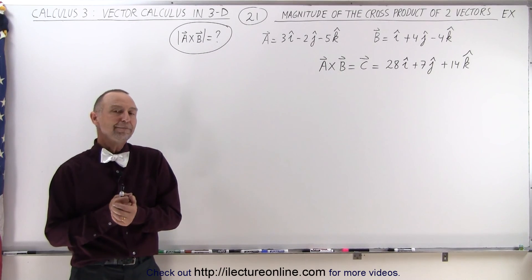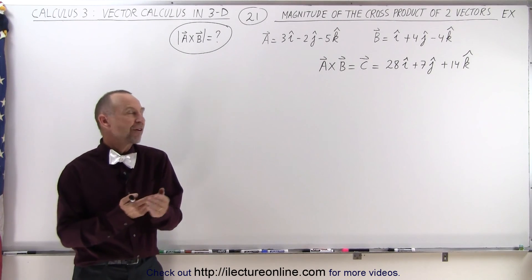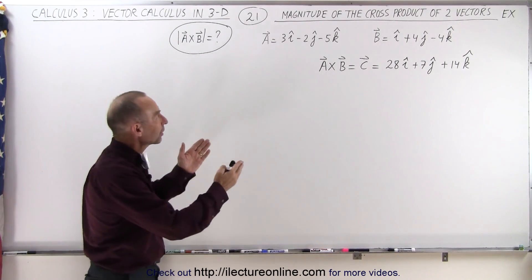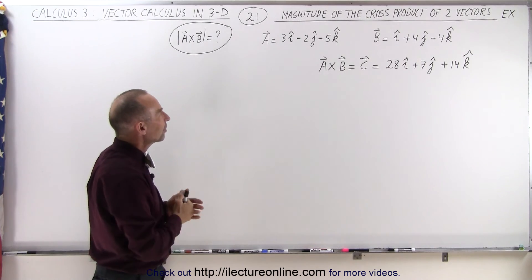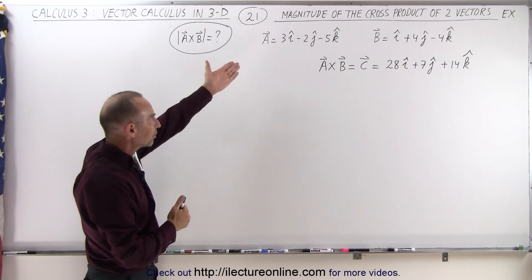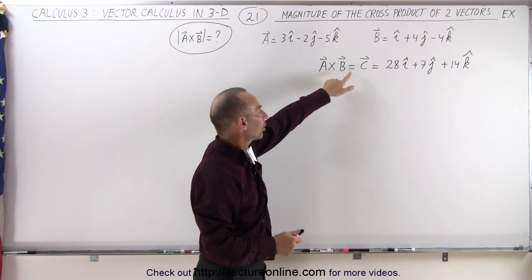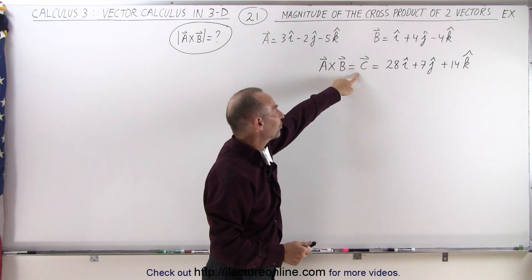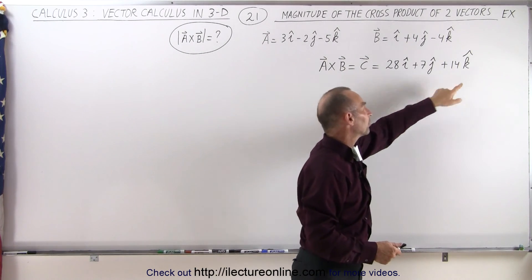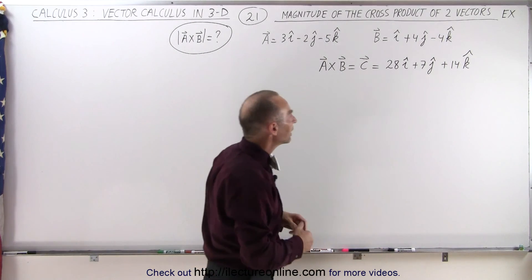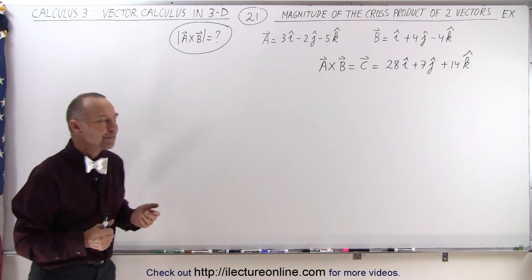Welcome to ElectronLine. In the previous video we found the cross product of two vectors a and b as they are defined, and we found that the solution — let's call it vector c — was defined as 28i plus 7j plus 14k.